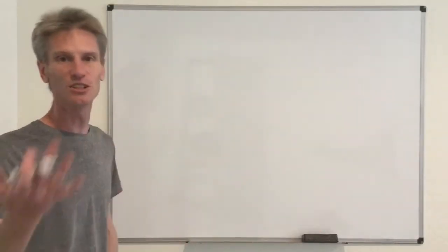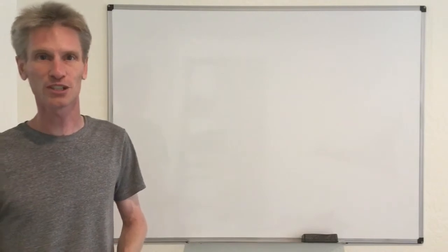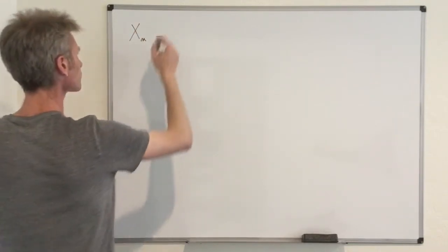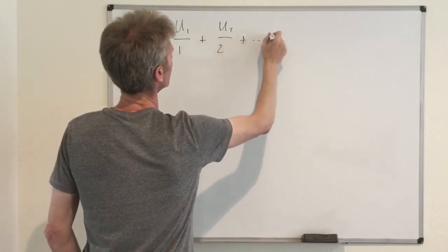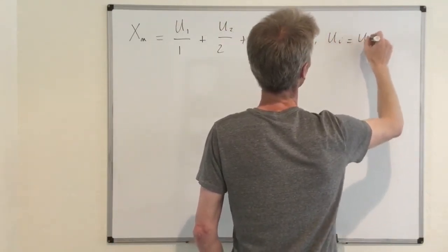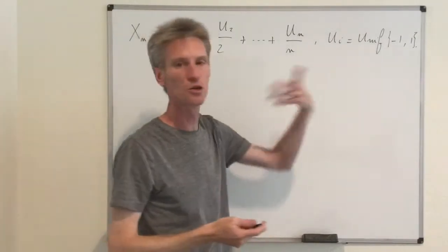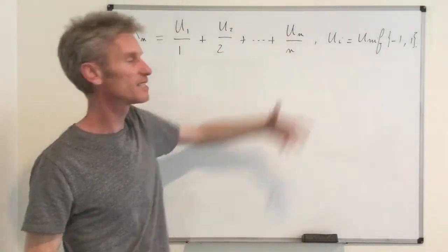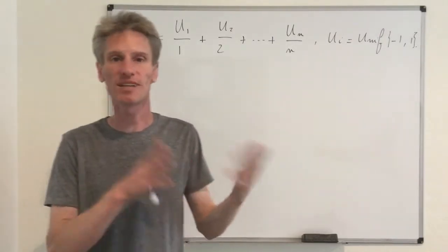The goal is to use the martingale convergence theorem to check that we have almost sure convergence to a random variable. We rewrite the process as xn = u1/1 + u2/2 + ... + un/n, where the random variables ui are uniform on the set {−1, +1}, and we assume the ui are independent. To study convergence of this random harmonic series, the goal is to check that xn is indeed a super-martingale or sub-martingale.